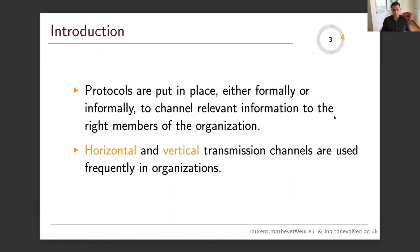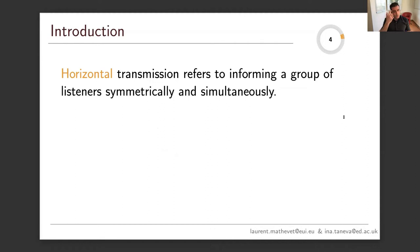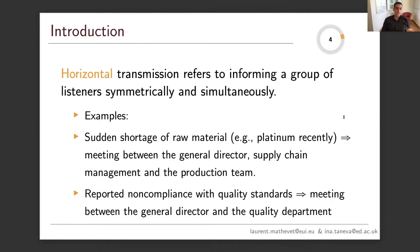What we mean by horizontal transmission is informing a group of listeners symmetrically and simultaneously. Here are two examples coming from a friend who is a general director of a company. She told us that when there is a sudden shortage of raw material — in her case, platinum — this typically prompts a meeting between her, the general director, supply chain management, and the production team, during which they share relevant information about that shortage. Another example is when a customer reports non-compliance with quality standards, which causes a meeting between her and the quality department.